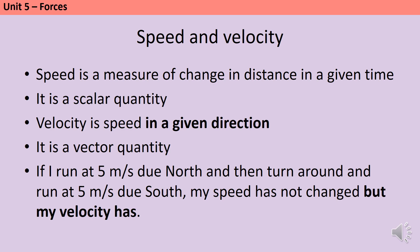My other pair of quantities are speed and velocity. Speed is a measure of what the change in distance has been in a given time, and this is a scalar quantity — it doesn't matter what direction I'm travelling. Velocity is defined as speed in a given direction, so because it has a fixed direction it's a vector quantity. If I run at 5 meters a second due north and then turn around and run at 5 meters a second due south, my speed hasn't changed but my velocity has — from 5 meters a second to minus 5 meters a second — and this is how I show that I've changed direction.